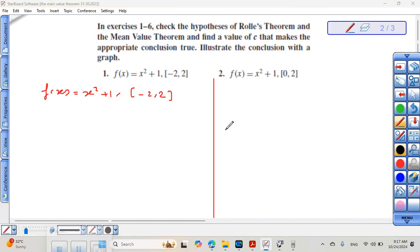How to check all the conditions related to Rolle's Theorem? Step one or condition one. f of x is polynomial. If a polynomial is continuous everywhere, then continuous on the interval from negative 2 to 2. This is satisfied.